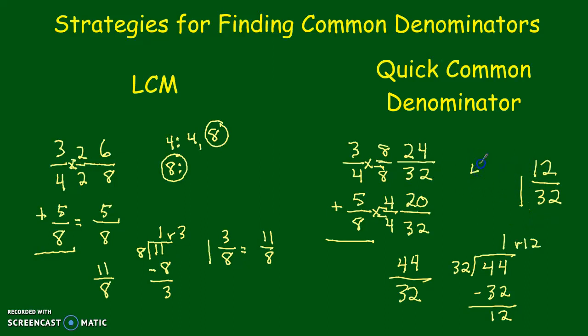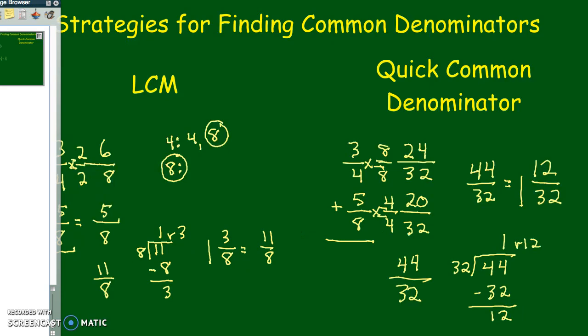And, as you can see, 44/32 equals 1 and 12/32. We're not going to talk about simplifying it all in this video. That will come up later on. Let me know if you have any questions. And we'll see you in the next video.